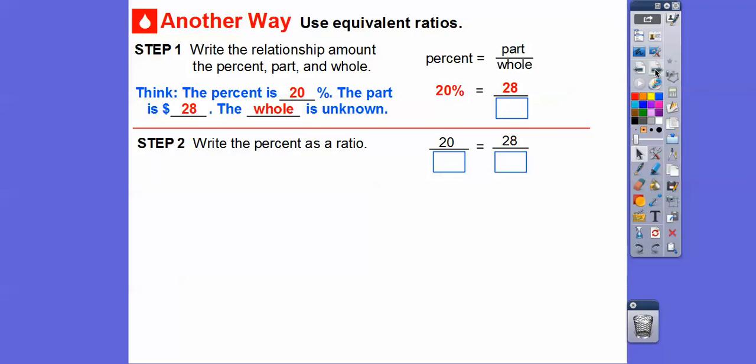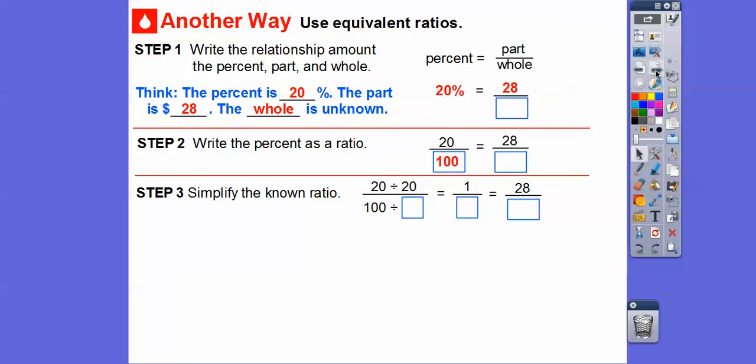Let's write the percent as a ratio. So 20 percent is 20 one-hundredths. And then we'll simplify the known ratio. So 20 one-hundredths, we can simplify this because 20 goes into 100 five times.